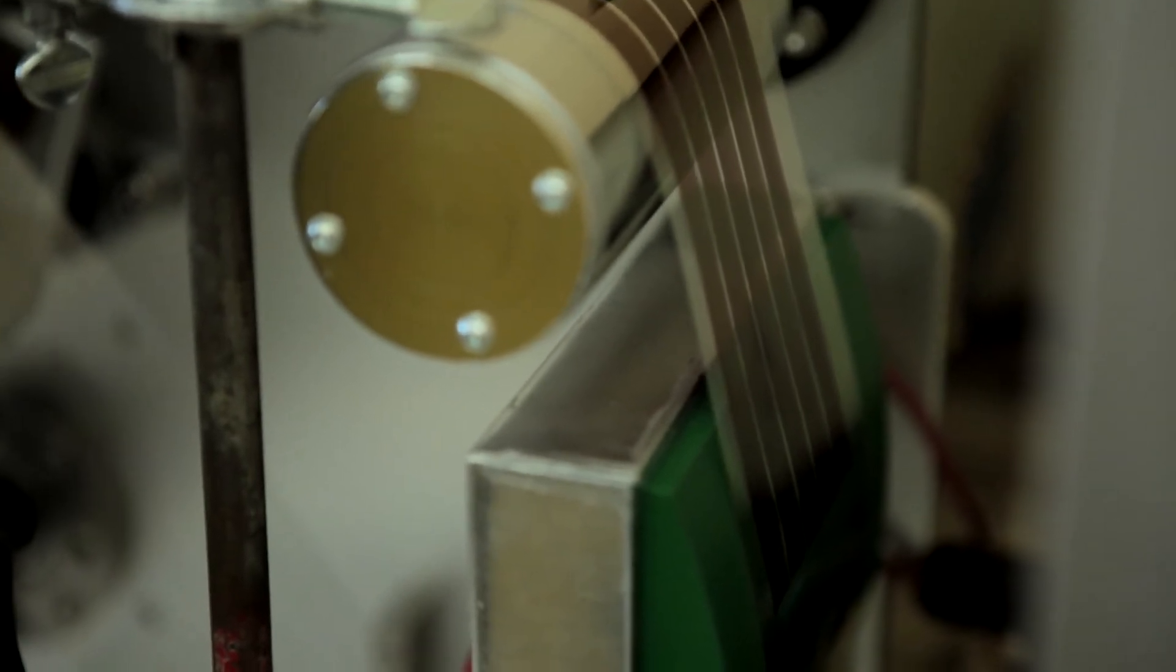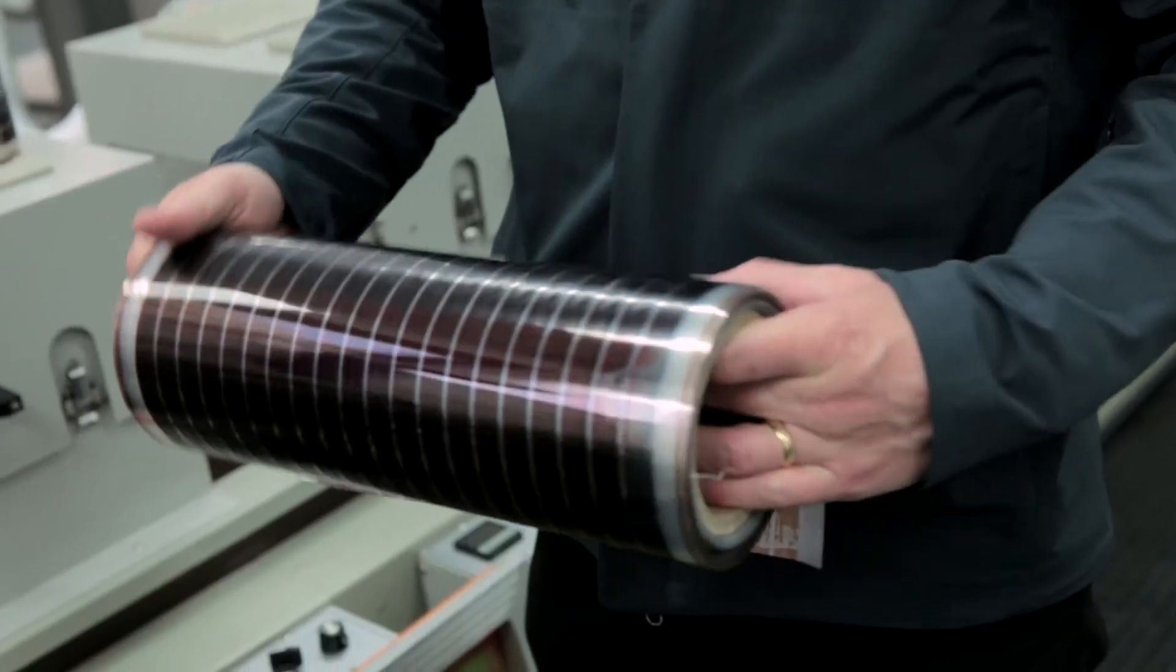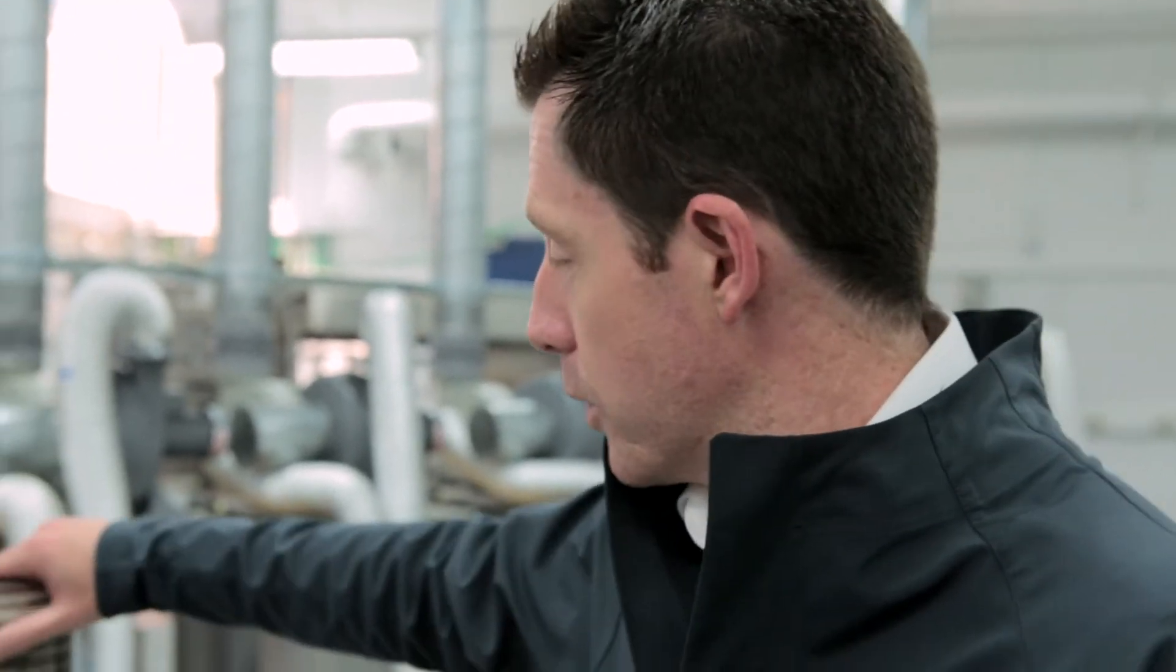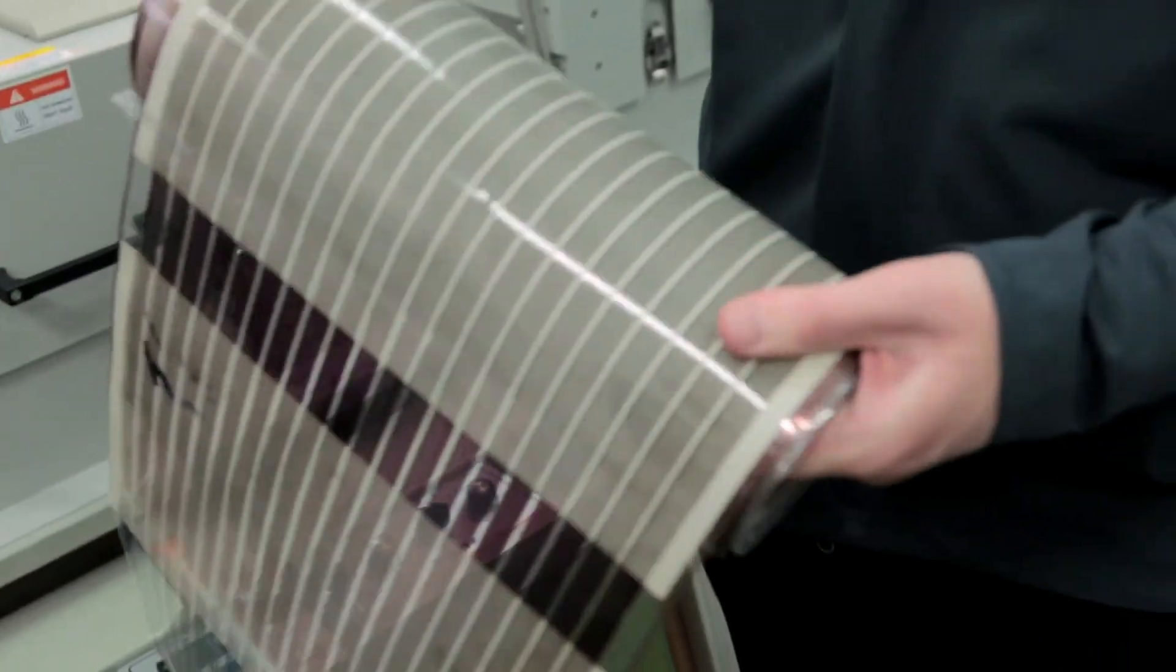So we take the rolls from the printer that we just saw that have the polymer ink printed down onto them and we bring these and install them on this printer here. What this printer does is puts down the top electrode and that's a silver grid and we can see that silver grid printed on here on the finished solar cell.